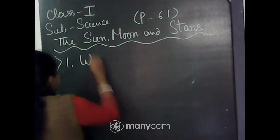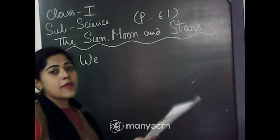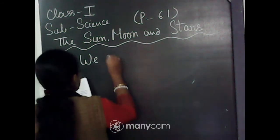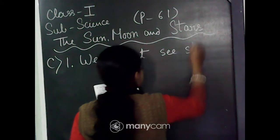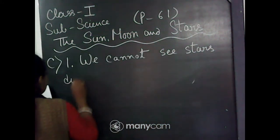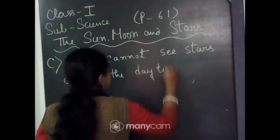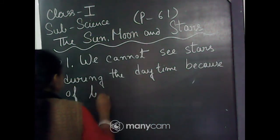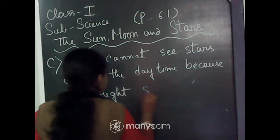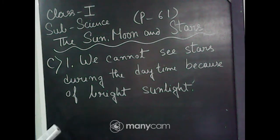I am writing the answer here. If you already done it, you can check it; if you have not written it yet, do it now. You can write those answers from the board. Write it in full sentence: we cannot see stars during the daytime because of bright sunlight.